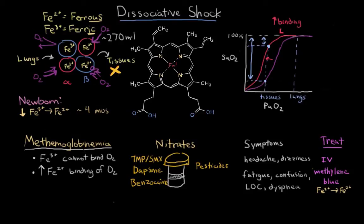Now to finish this up, methemoglobin is not the only cause of dissociative shock. Another major cause is carbon monoxide poisoning. So the molecule carbon monoxide has one carbon and one oxygen. Carbon monoxide. So carbon monoxide actually binds hemoglobin, Hb, a hundred times greater than oxygen.